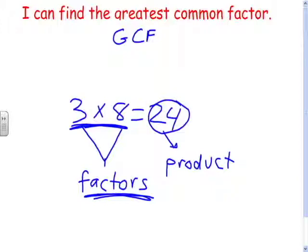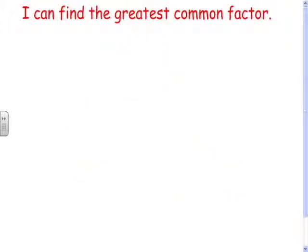So there's our definitions. You have to understand factors and products, and we're going to be looking for the greatest, the biggest, common between two or more numbers factor—the number that is multiplied to get both numbers. So let's just take an example.